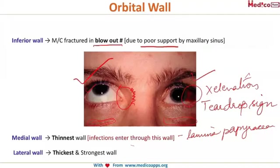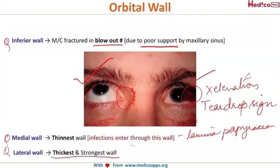The lateral wall is the thickest and the strongest wall. To summarize: the inferior wall is most commonly fractured; the medial wall is the thinnest, so infections can enter through it into the orbit; and the lateral wall is the thickest and the strongest.